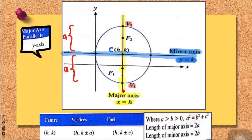For V1, the x-coordinate doesn't change from your center — it still has the same coordinate h. However, the y-coordinate definitely changes because the point k has gone down as much as distance a. Therefore the y-coordinate will be k minus a.